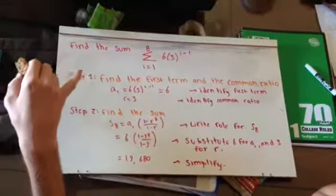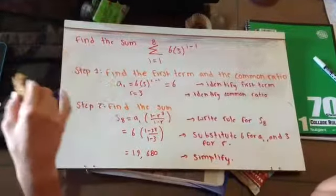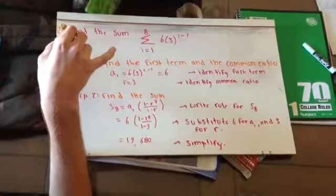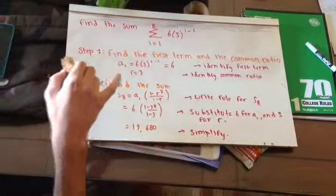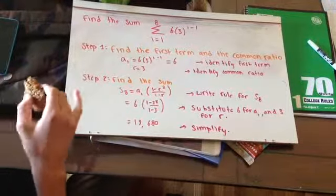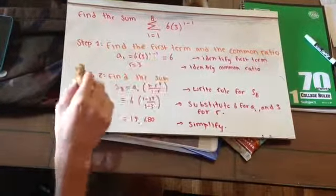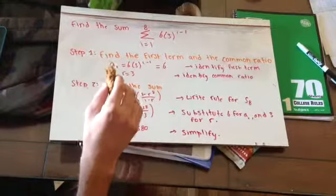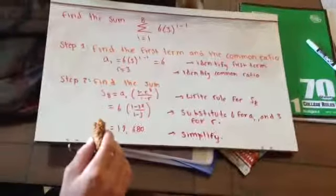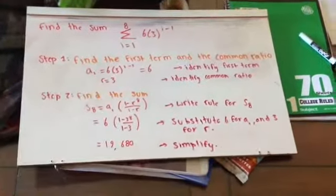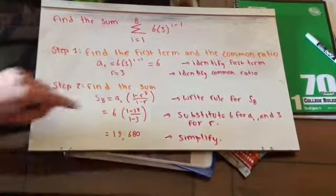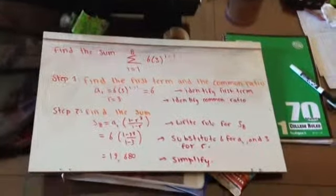We're going to find the sum here. We have 8, summation notation, I equals 1, 6 times 3 to the I minus 1. We're going to find the first term and the common ratio. Our common ratio is 3. We identify the first term and common ratio, then find the sum. We put it into the formula, S8 equals A1, and write our rule. Then we come up with this equation and do 1 minus 3 to the 8, which is negative 37, and 1 minus 3, which is 2. Substitute 6 for A and 3 for R, and come out with 19,680.